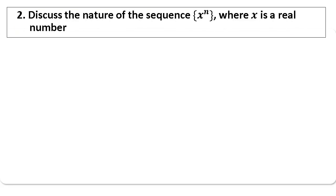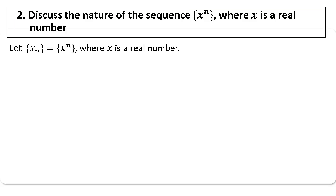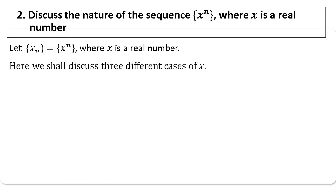Now we come to the second problem: discuss the nature of the sequence x^n, where x is any real number. Let xn = x^n. To cover all real numbers, we shall consider three different cases: |x| < 1, |x| = 1, and |x| > 1.